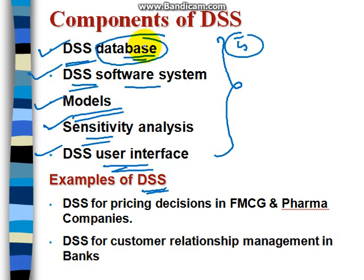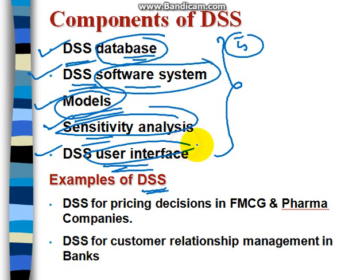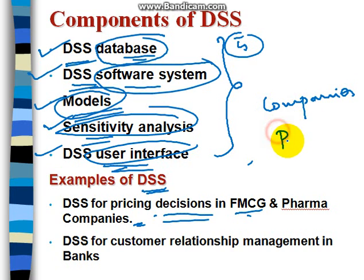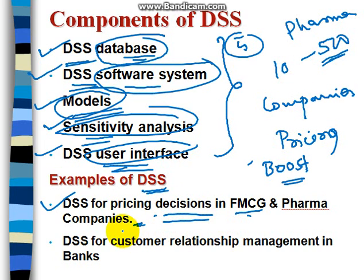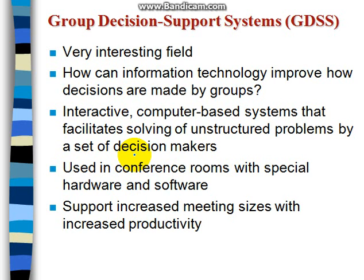In DSS, first a database is created, then there is software, then we design the model, do sensitivity analysis, and the user interface is there. DSS is used for pricing decisions in FMCG and pharma companies. It becomes very difficult to decide what pricing should be kept to boost sales. Even in pharma, where medicines manufactured for 10 rupees are sold for 500 rupees, DSS plays a vital role. Second, DSS is also used for customer relationship management in banks. We'll be looking at GDSS, the Group Decision Support System, in the next slide.